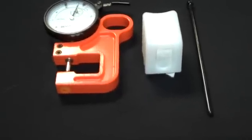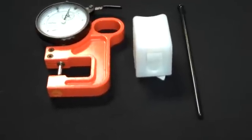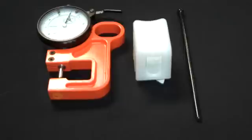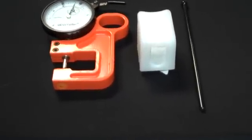This is the Elcometer Model 124 foil thickness gauge and the Model 122 replica tape. Together these are used to measure the surface profile of your blasted substrate.